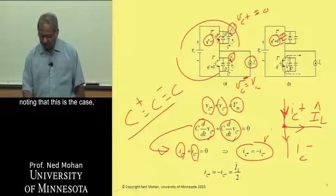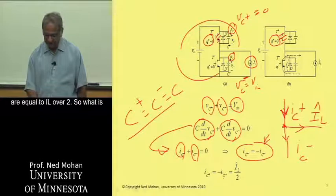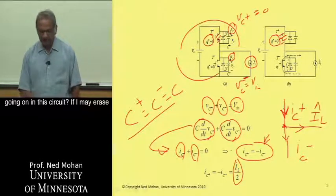and noting that this is the case, we can see that these two currents are equal to IL over 2.